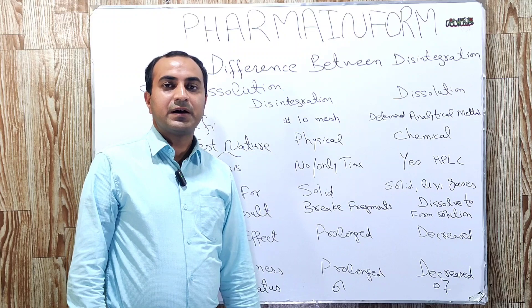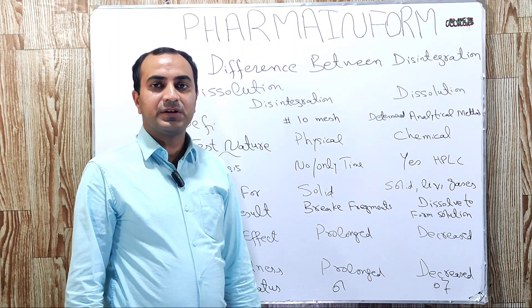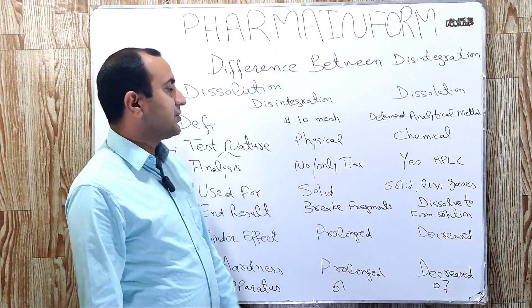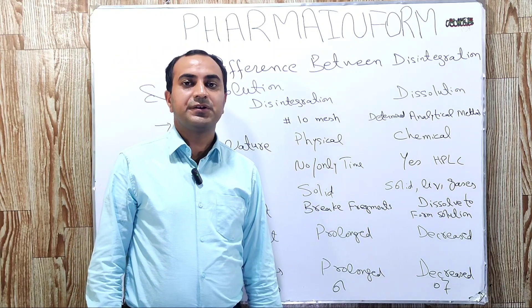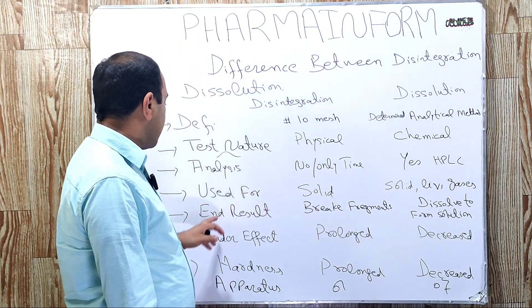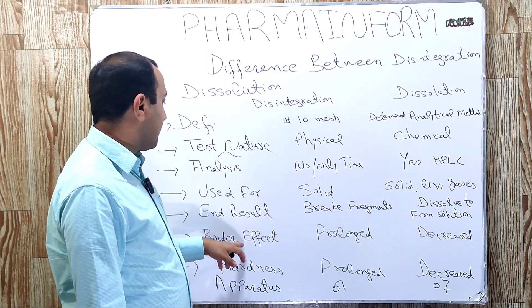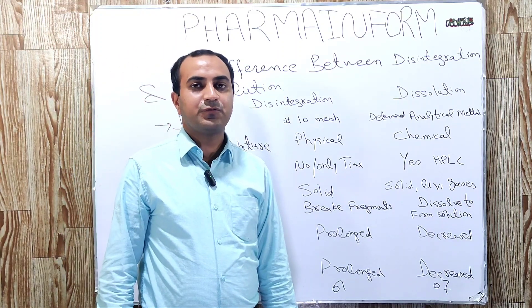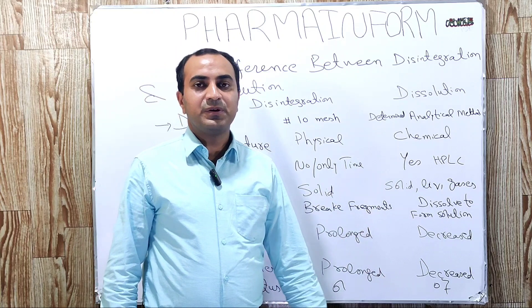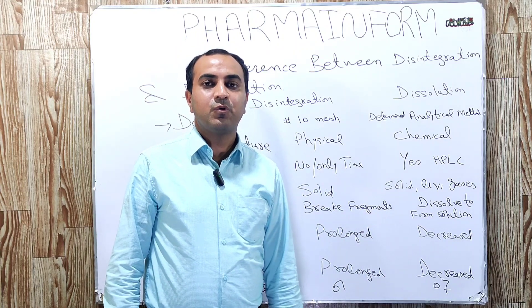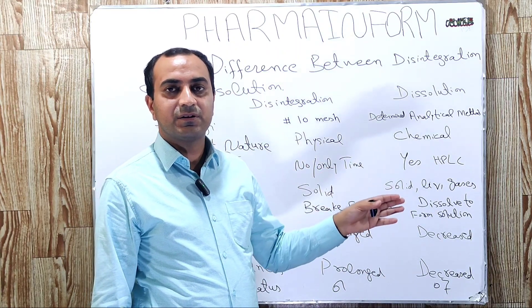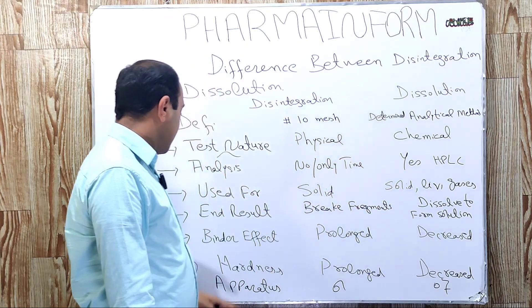The next difference is the effect of binder. If the binder amount is increased in our dosage form, the disintegration time will be increased or prolonged. But if we increase the amount of binder in our dosage form, the dissolution profile will be decreased because more binder results in less release of the drug.